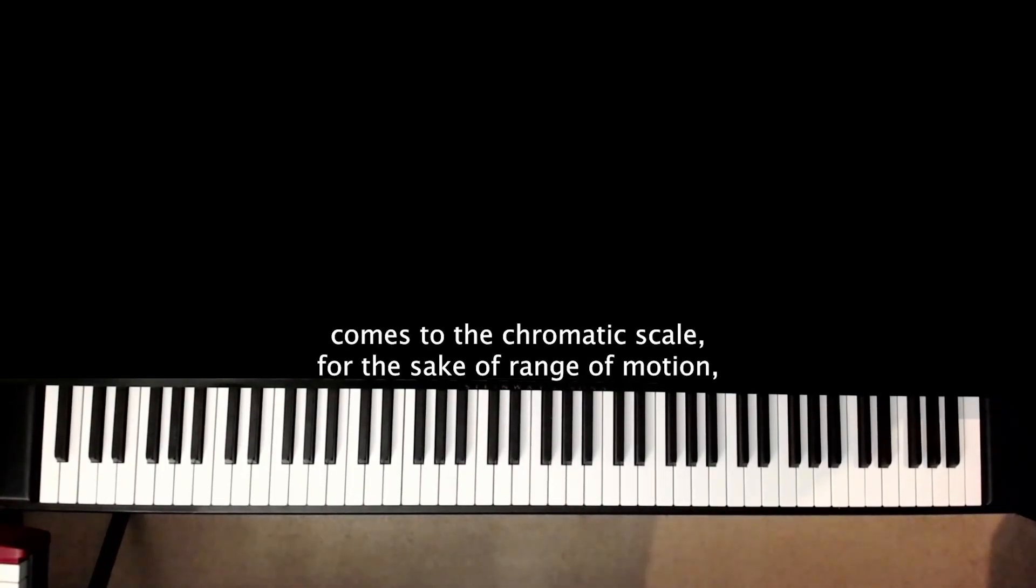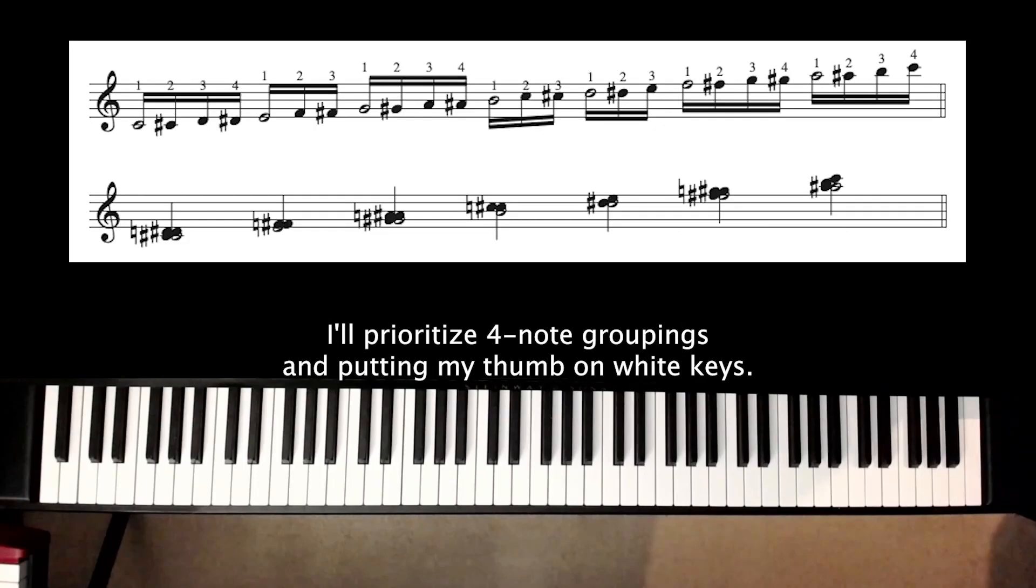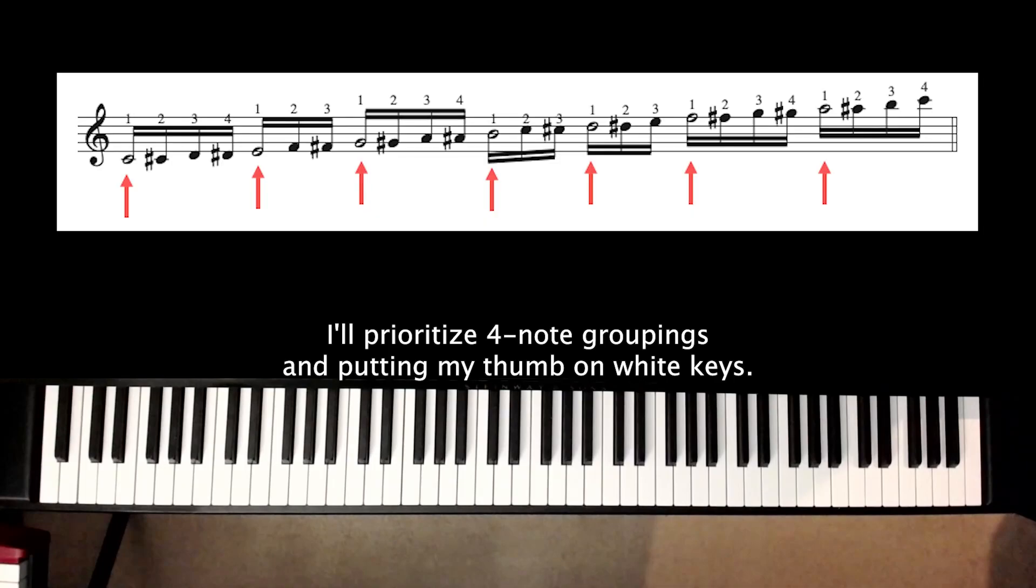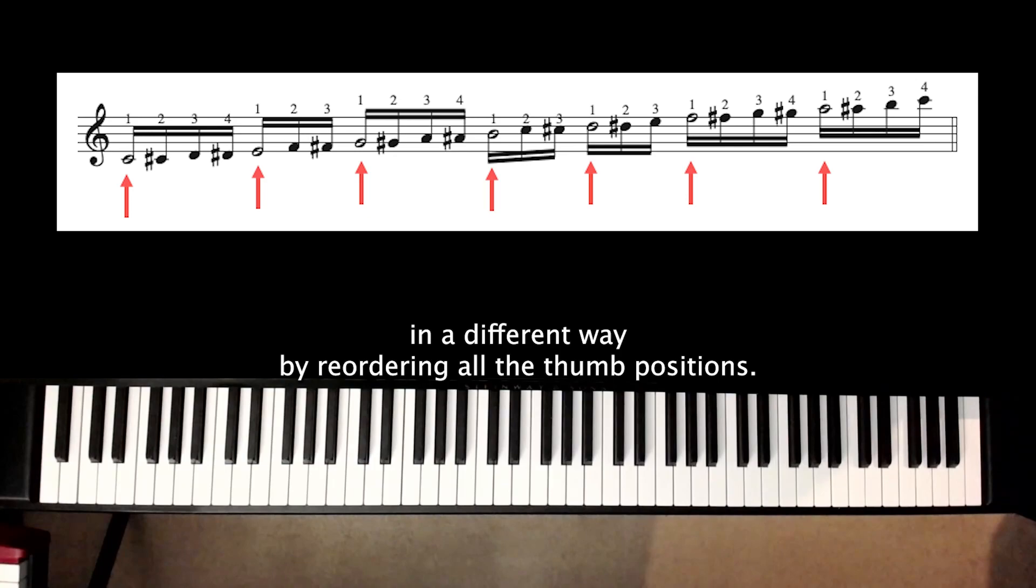So when it comes to the chromatic scale, for the sake of range of motion, I'll prioritize four-note groupings and putting my thumb on white keys. With this in mind, we can practice and explore the chromatic scale in a different way by reordering all the thumb positions.